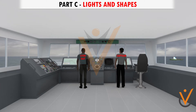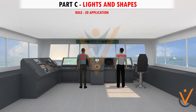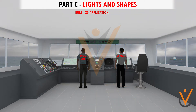Part C: Lights and Shapes. Rule 20 — Application. This rule stipulates the times and circumstances under which the rules of this part are to be applied. Lights should be shown from sunrise to sunset and even in daytime during restricted visibility.